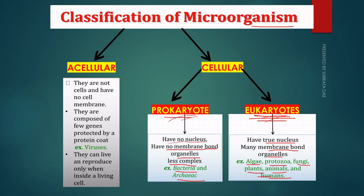Humans are animals. The main eukaryotic microorganisms are algae, protozoa, and fungi. This is the classification of microorganisms as acellular and cellular.